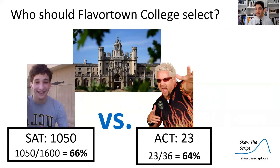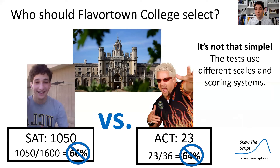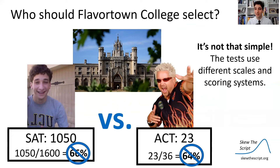One simple analysis we could do is just divide the number of points we earned out of the total. I got 1,050 out of 1,600 possible points, or 66%. Guy Fieri got 23 out of 36 — that's 64%. So maybe I'm the better one to admit, but unfortunately it's not that simple. These tests use very different scoring scales and systems, so this is not a fair comparison. We can't just divide the numbers out of the total.